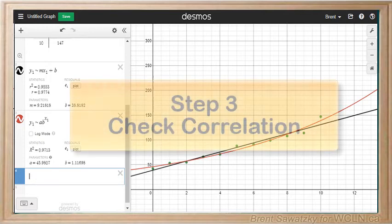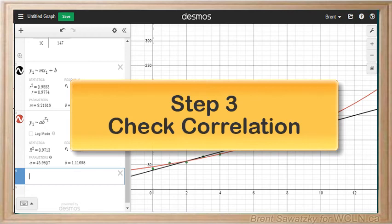Step three. As we consider which is a better fit, it's not always visually clear which is the best. This is where our knowledge about correlation coefficients and coefficient of determination helps us sort this out.